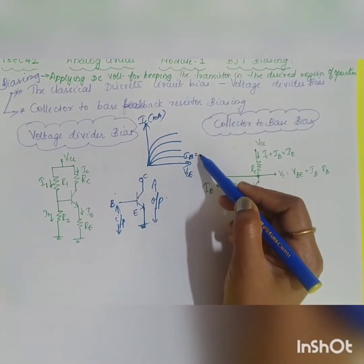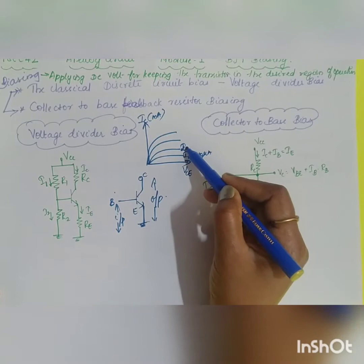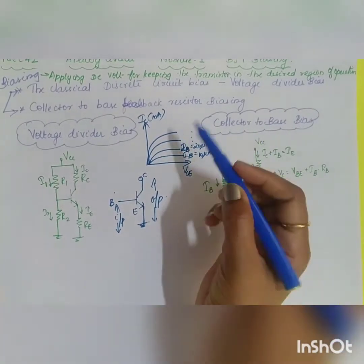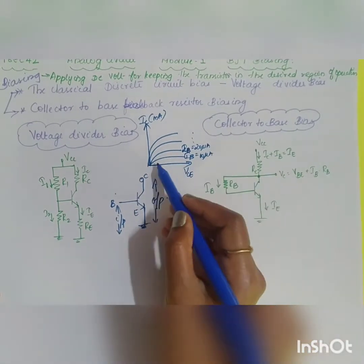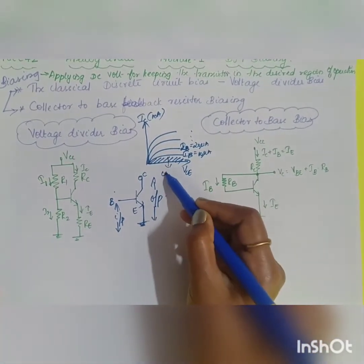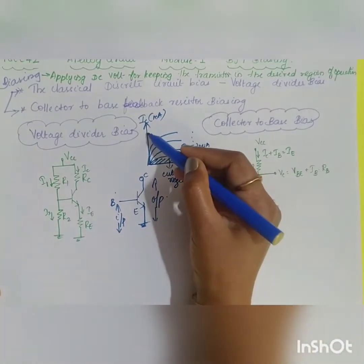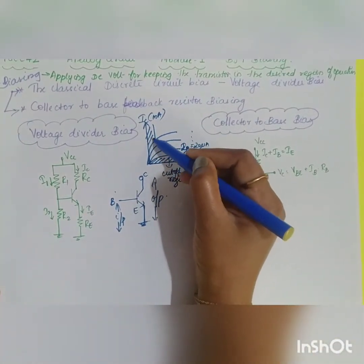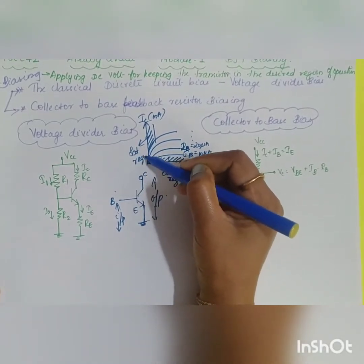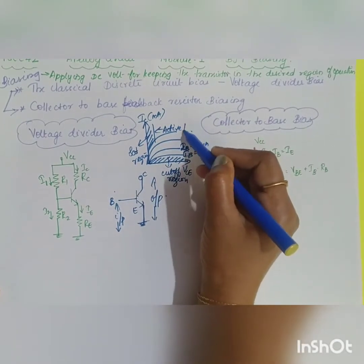IB can take values such as 10 microampere, 20 microampere, and so on. The transistor works in three modes of operation. The first region is called the cutoff region, the second is called the saturation region, and the middle part is called the active region.